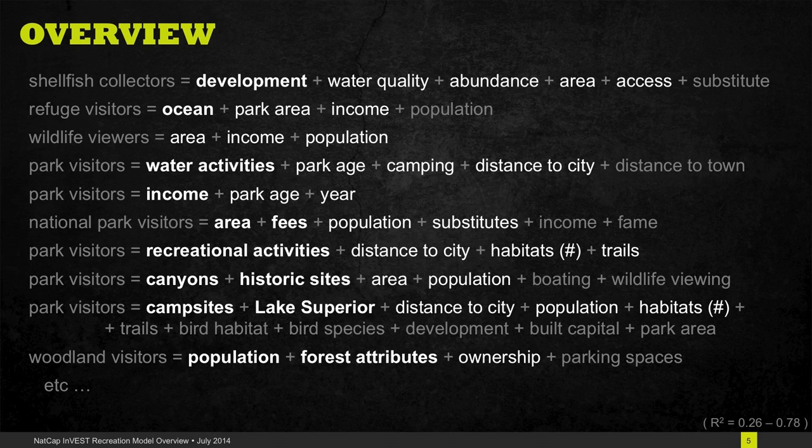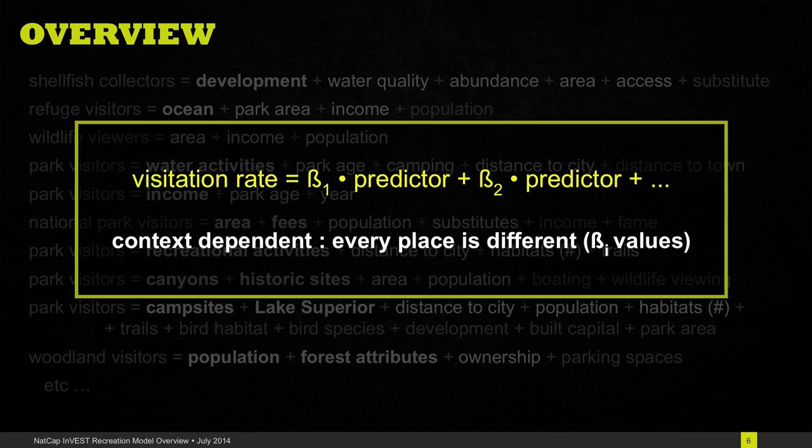Unfortunately, what we find is that in order to study visitation we need to know the effect of each of those predictors in each place. In other words, in each place that you study visitation, people's decisions about where to recreate and why are different. As a result, we need to have data for a place that we can use to measure the effect of those different predictors on the visitation rate.